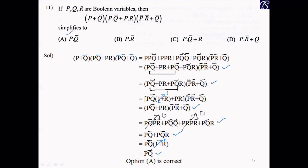This concludes the practice problems on Boolean algebra. The key theorems covered are De Morgan's theorem and the consensus theorem. In the next lecture, we will discuss a very important topic — Sum of Products (SOP) and Product of Sums (POS). Thank you very much.